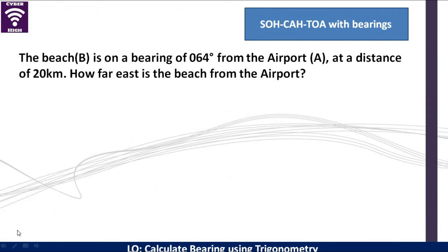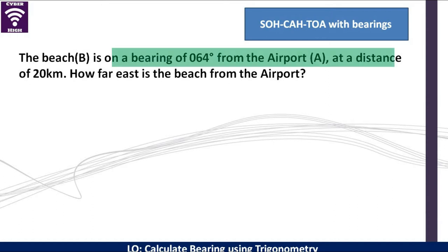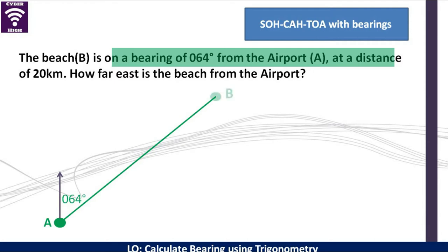Let's look at this first example. The beach B is on a bearing of 064 degrees from the airport A at a distance of 20 kilometers. How far east is the beach from the airport? You have to highlight the key areas or key statements of the question. The bearing is 064 degrees, so you plot your point of the airport. Remember, bearing is always measured from the north, so you need to indicate your north direction. Then 064 degrees is the angle, and we draw our line. That is our point B, which is the beach. The distance is 20 kilometers between these two.